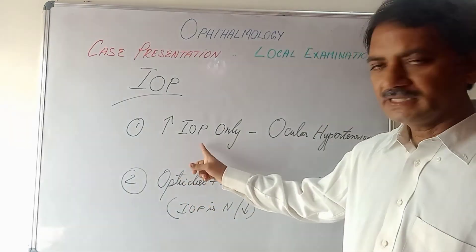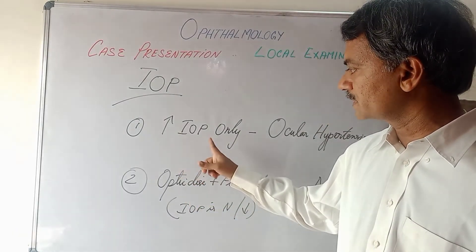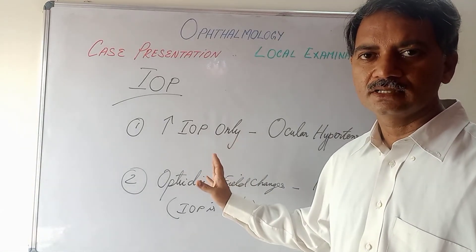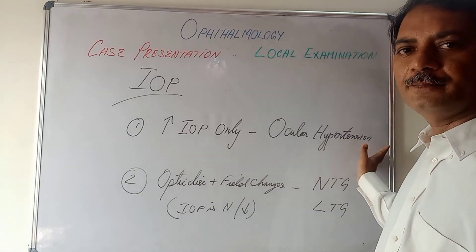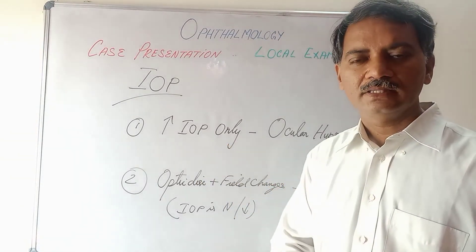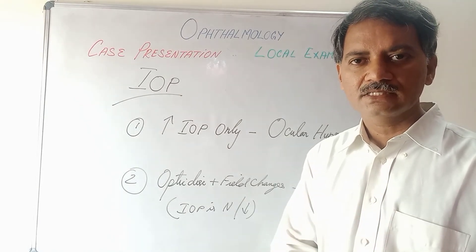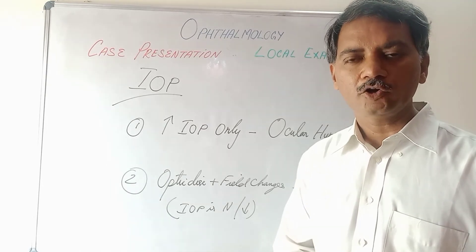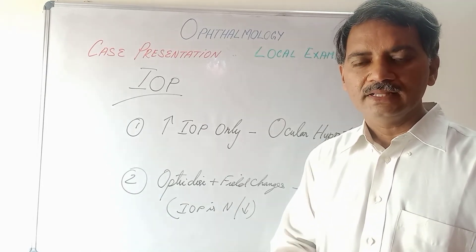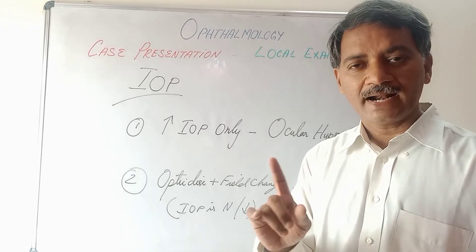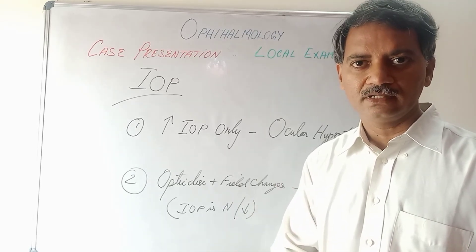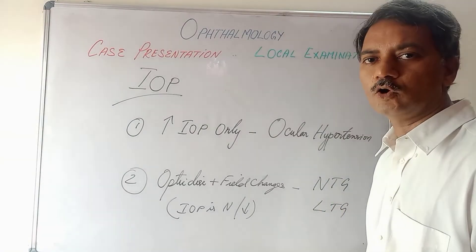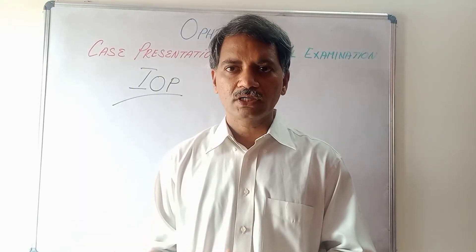If only the intraocular pressure is raised with no field changes or optic disc changes, that is called ocular hypertension. If there are optic disc changes and field changes suggestive of glaucoma but the intraocular pressure is normal or low, the patient can still be diagnosed as a glaucoma patient, but the diagnosis will be normal tension glaucoma or low tension glaucoma.